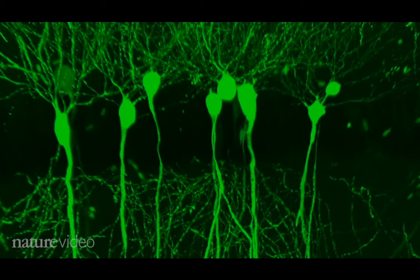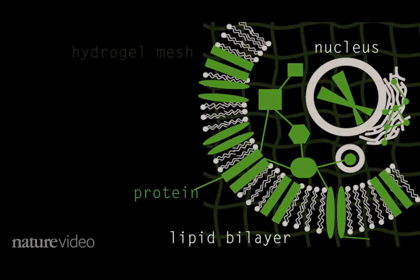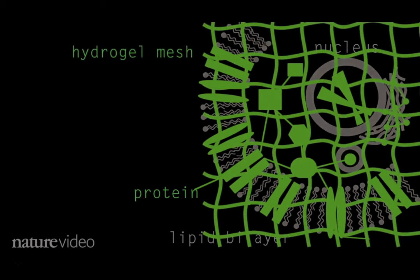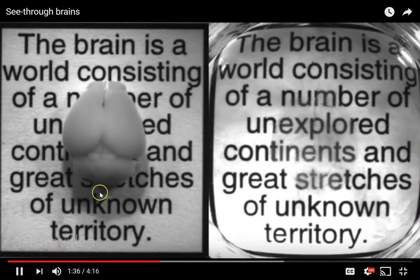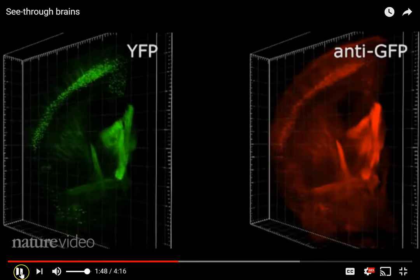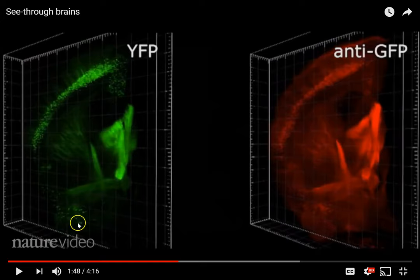So how do you make a brain transparent? The thing that obscures the view is fat — lipid layers surround each cell. To remove them without disrupting the cell structure, the team used a hydrogel to create a mesh to hold the rest of the components in place, then cleared away the fat. This is a mouse brain before and after — the brain is now transparent to light but also permeable to molecules, which means scientists can add molecular markers. This is where the immunohistochemistry comes in: labeling different types of proteins with fluorescent dyes of different colors.